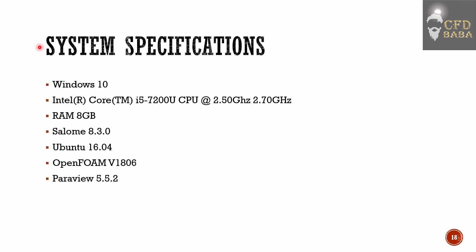These are the system specifications used to solve the cases: Windows 10 with an i5 processor and 8GB RAM. The main software required to complete this course are: Salome 8.3.0, which is the pre-processing software where we prepare our geometry and mesh it; OpenFOAM, which is the solving software installed inside Ubuntu 16.04, using OpenFOAM version 1806; and finally ParaView 5.5.2, used to post-process the results.